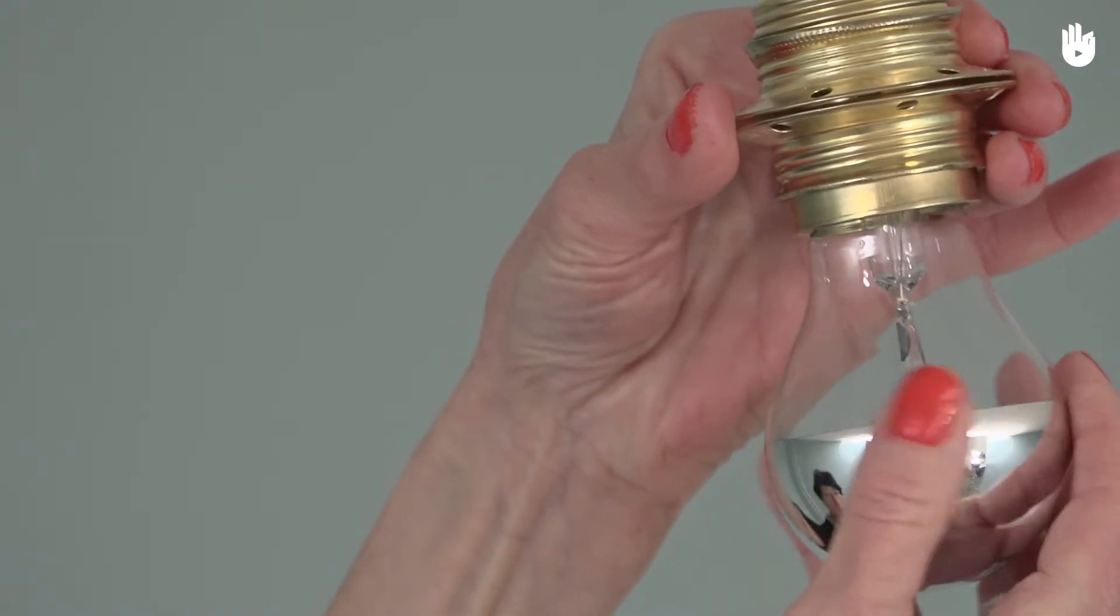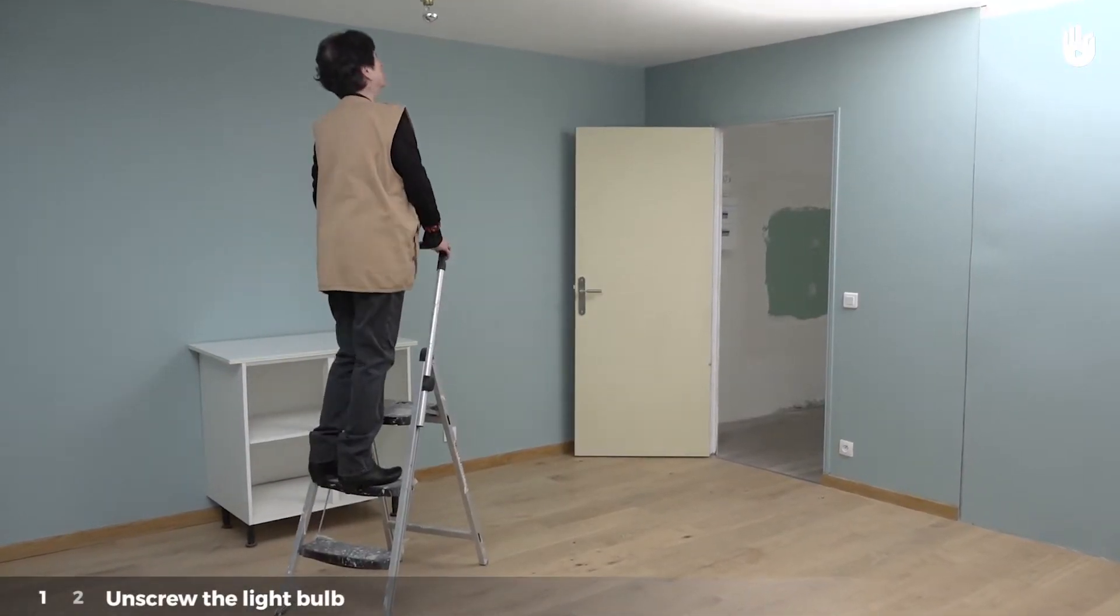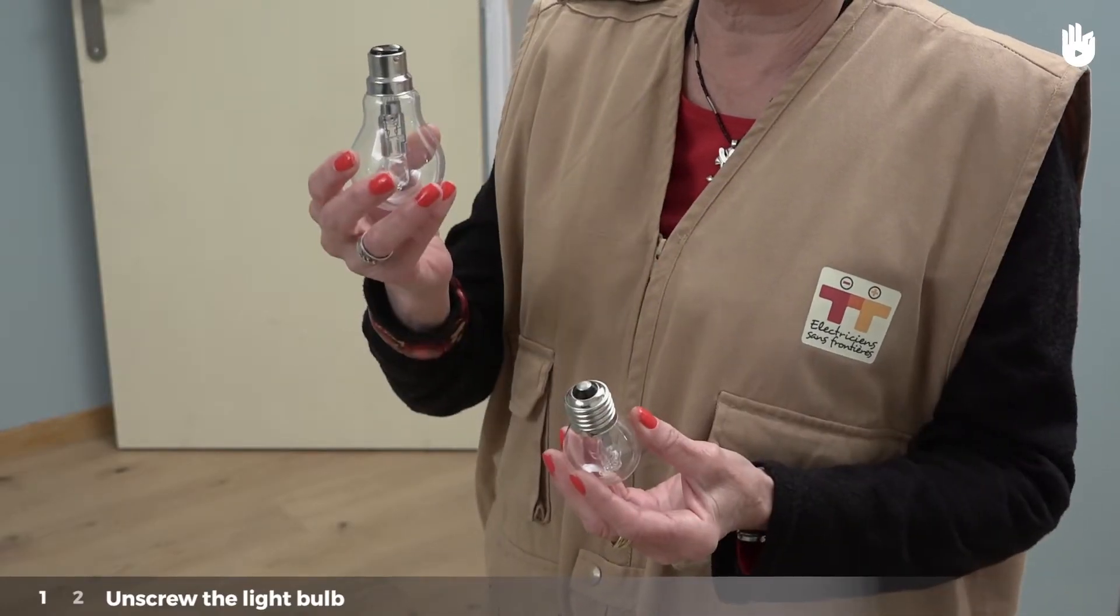This operation is done in two steps, which we will describe for you. Step 1: Unscrew the light bulb. There are two types of light bulbs, those with a screw-in base and those with a bayonet type base.